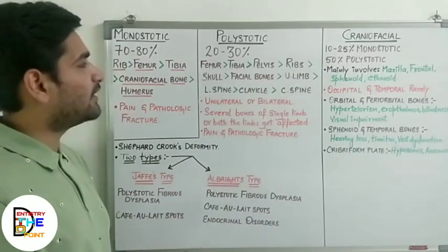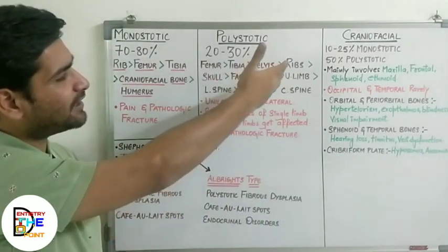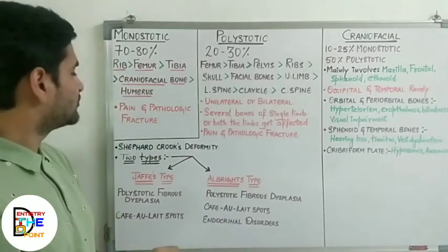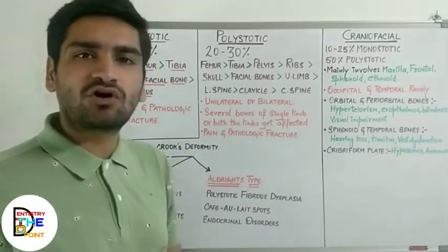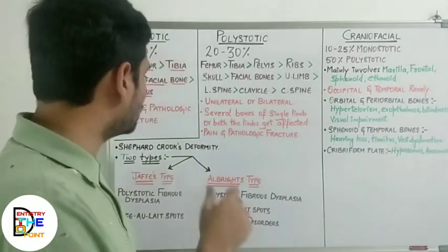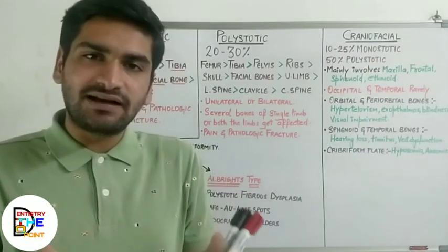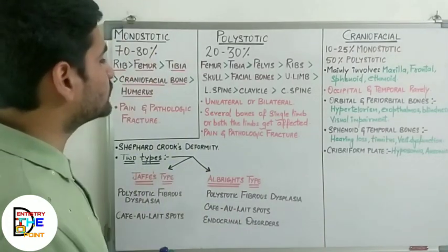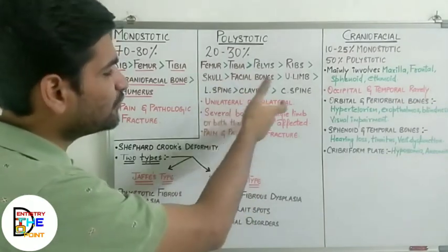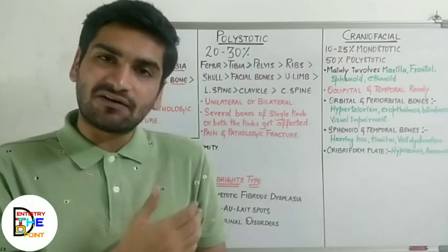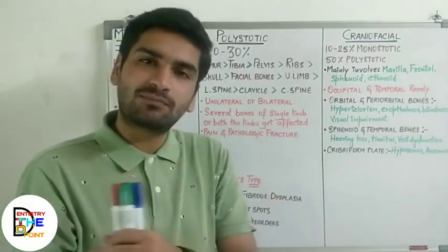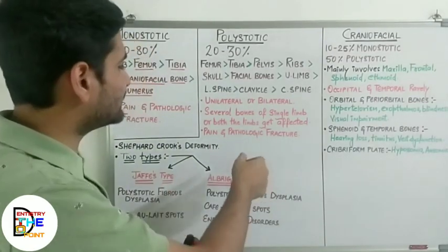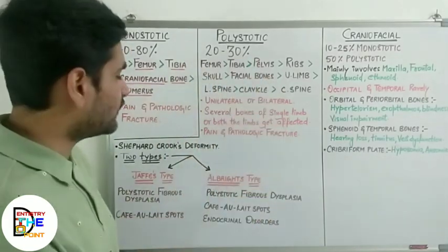In the polystotic form, the commonly affected bones are femur, tibia, pelvis, ribs, skull, facial bones, upper limb, lumbar spine, clavicle, and cervical spine. Pain and pathologic fracture are the most common signs — the structural integrity of bone becomes so weakened that there are chances of pathological fracture. The polystotic form may be unilateral or bilateral, affecting several bones of one or both limbs.